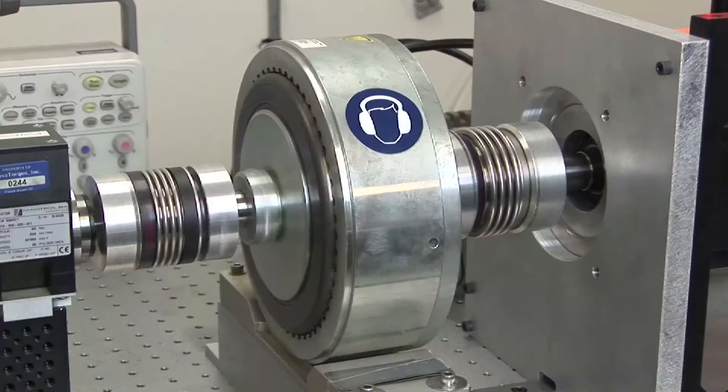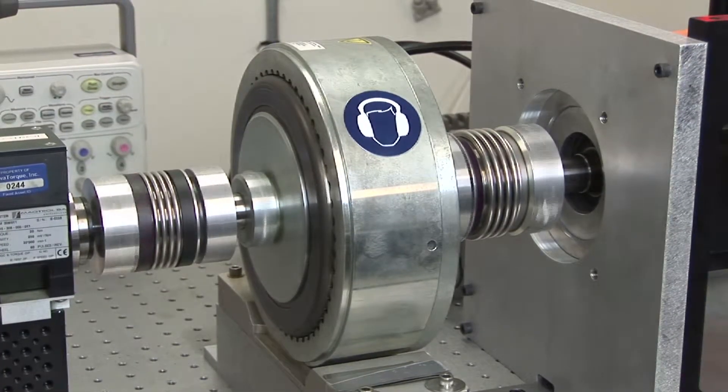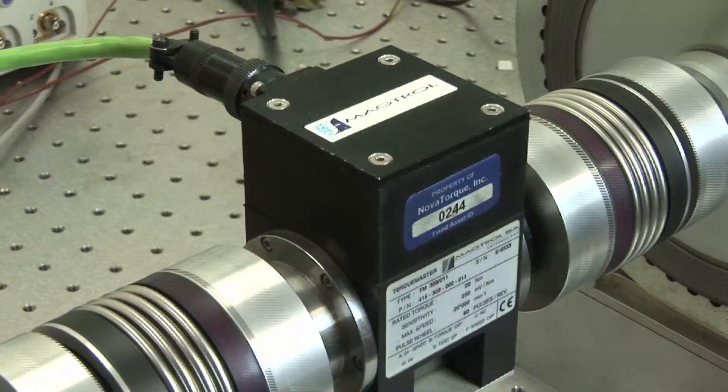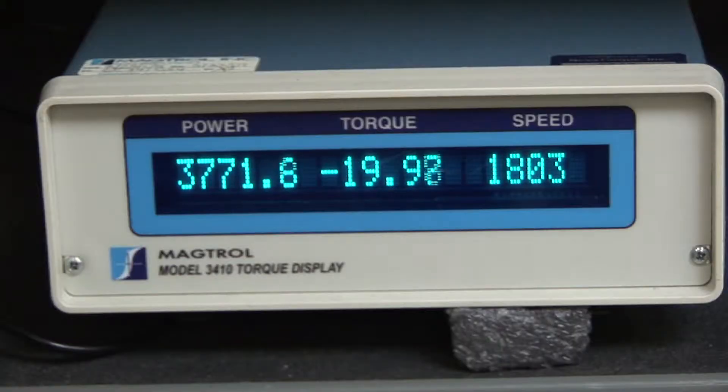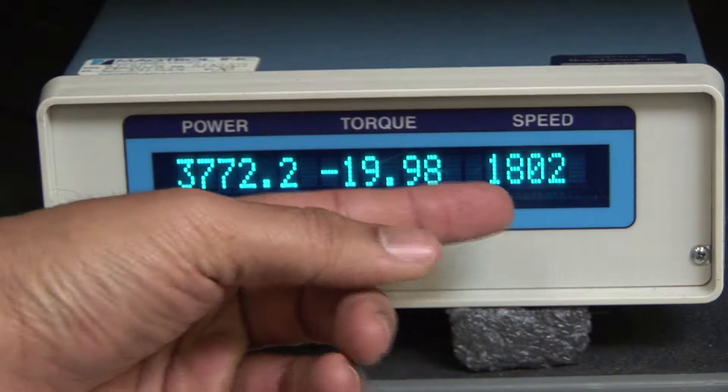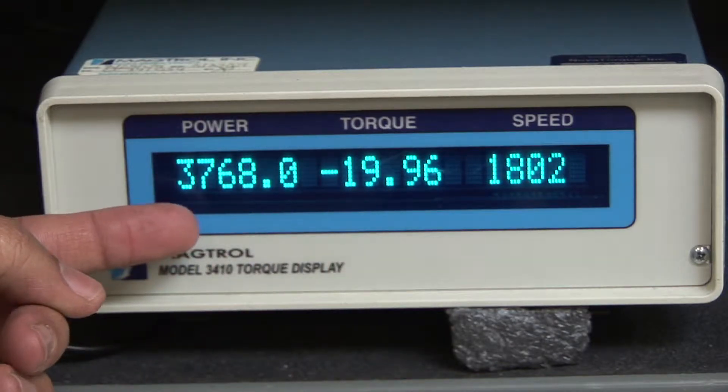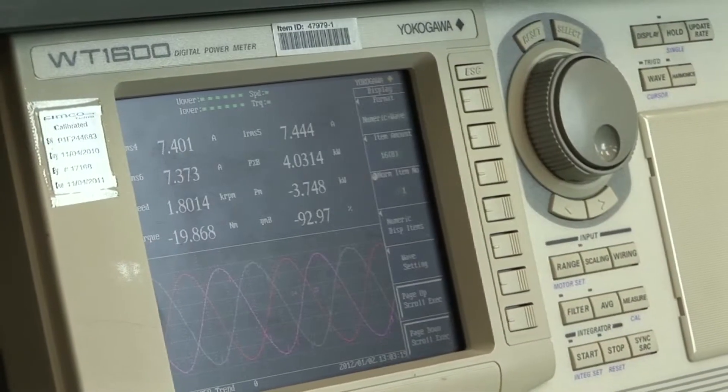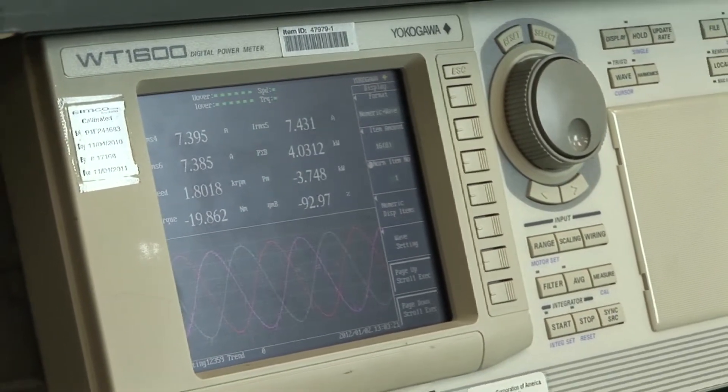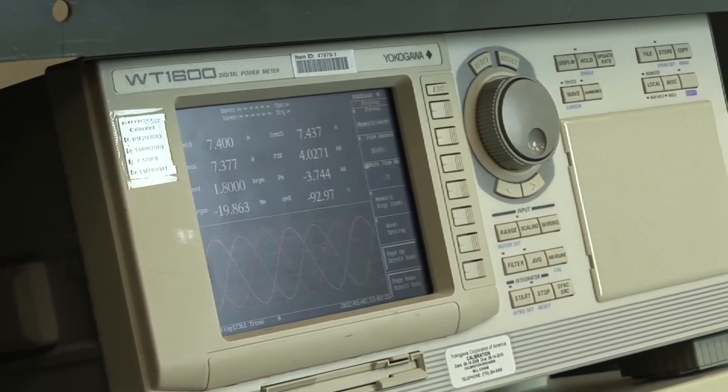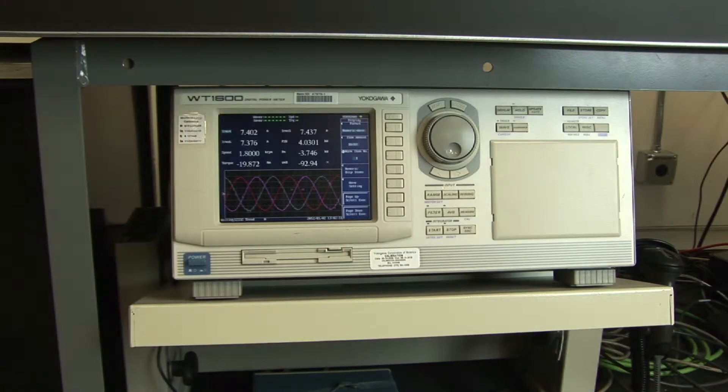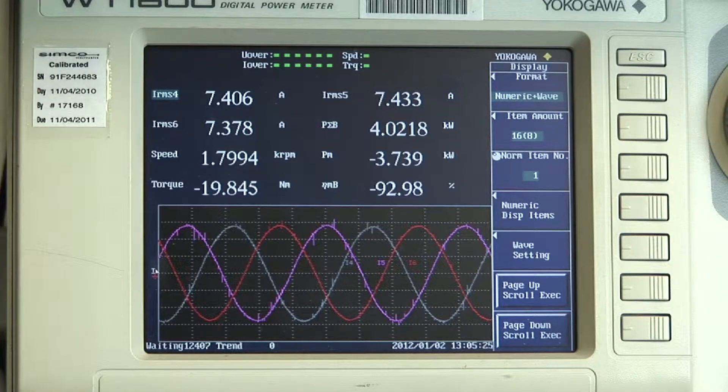The motor is currently operating under load. As the torque transducer measures the torque and speed, we are able to compute the mechanical output power of the motor. The digital power meter measures the voltage and current into the variable frequency drive and the motor. We can therefore measure the power going into the motor and compute both the system and the motor efficiency.